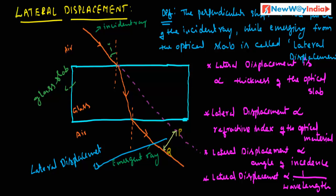The lateral displacement is inversely proportional to the wavelength. If you increase the wavelength of the light ray, the lateral shift also increases. If you decrease the wavelength of the light ray, the lateral displacement also decreases. So these are the important conditions for lateral displacement: thickness of the glass slab, refractive index of the material, angle of incidence, and wavelength.